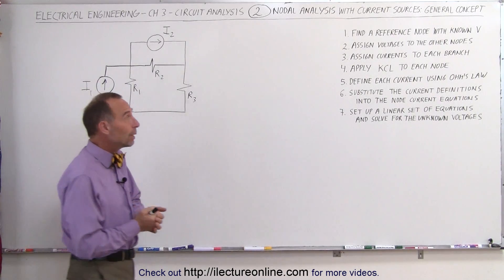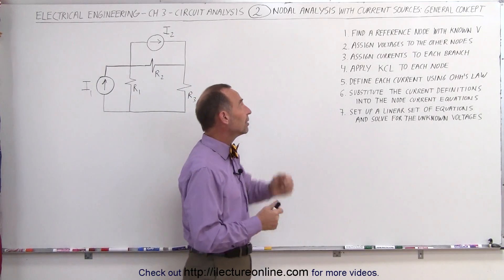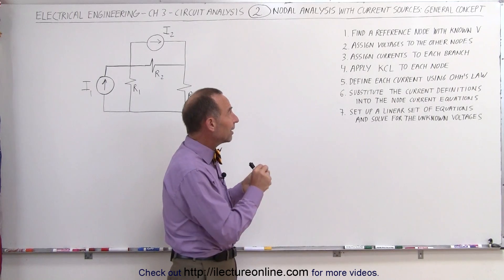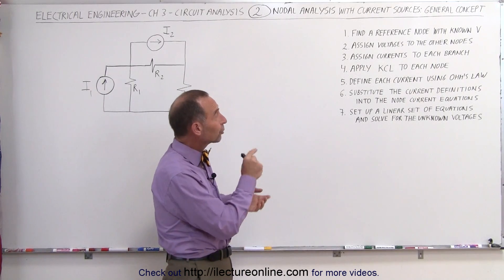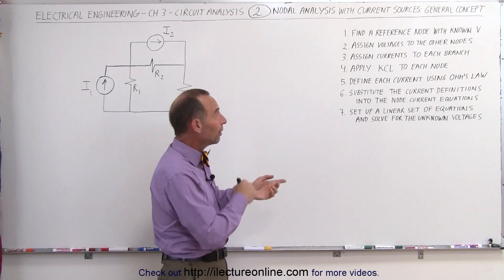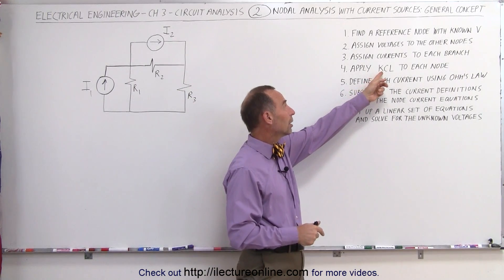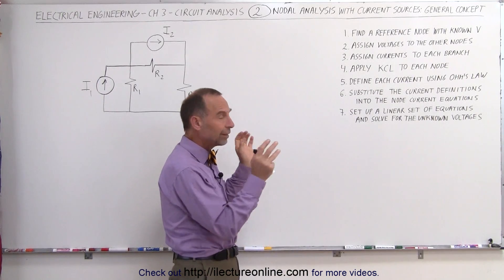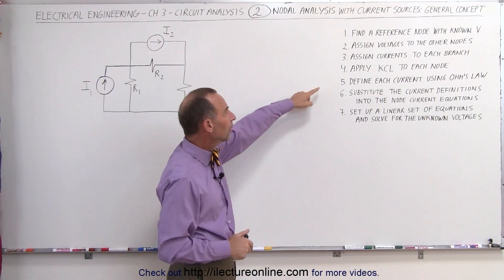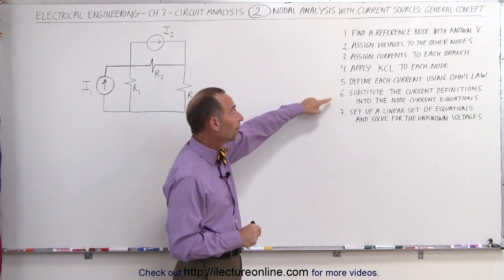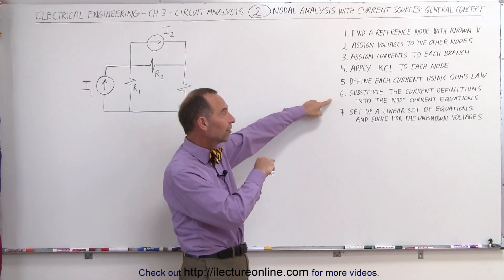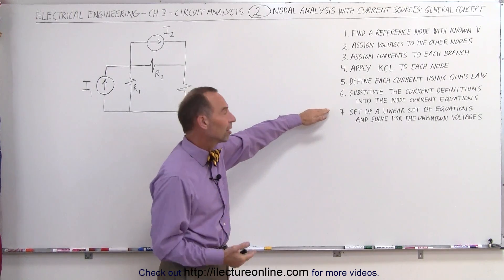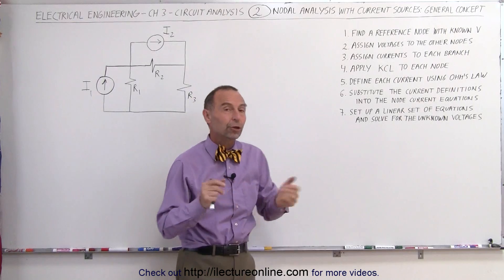To guide us, we have seven steps through which we need to go. We first find the reference node with a known voltage, then assign voltages to the other nodes, then assign currents to each branch. We apply Kirchhoff's current law to each node to find what the currents in and out of each node are. We define each current using Ohm's law, substitute those current definitions into the node current equations from step four, and finally set up a linear set of equations to solve for the unknown voltages.